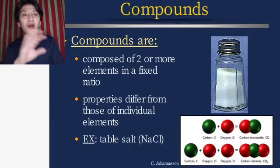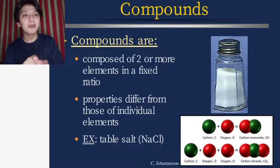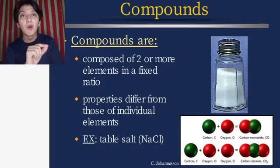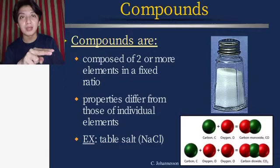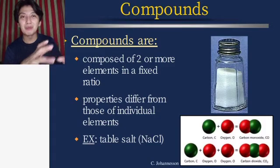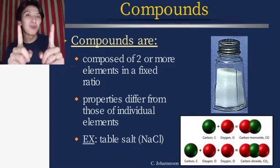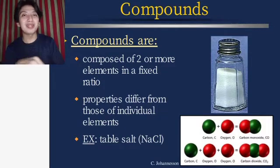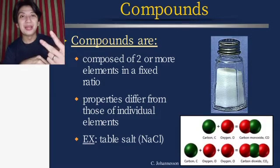Another example: one carbon and one oxygen produce carbon monoxide (CO), while one carbon and two oxygens produce carbon dioxide (CO2). The ratio differs — for carbon monoxide it is 1:1, and for carbon dioxide it is 1:2.